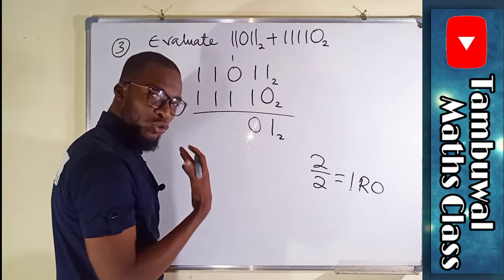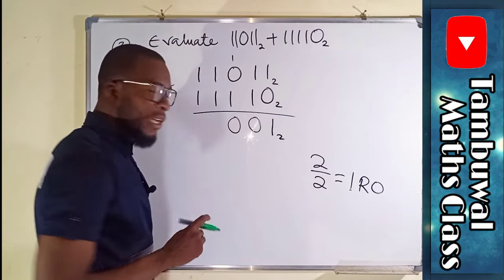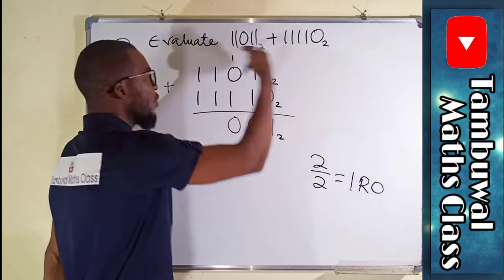One plus zero plus one is also two. And if you have two, it's one remainder zero. Drop down the zero. Take that one to the next.